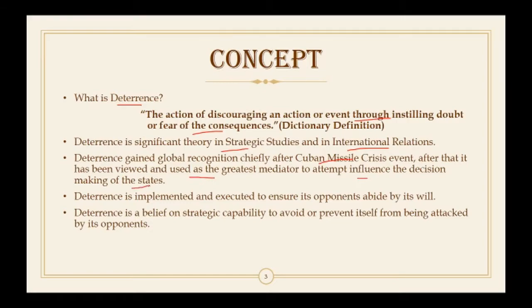In the Cuban Missile Crisis, the Soviet Union placed nuclear weapons in Cuba, near the United States, putting the US directly under threat of attack. The Soviet Union used this as a ploy for negotiating with the United States on certain terms. Deterrence is implemented to ensure its opponents abide by its will, and it is a belief in strategic capability to avoid being attacked by opponents.